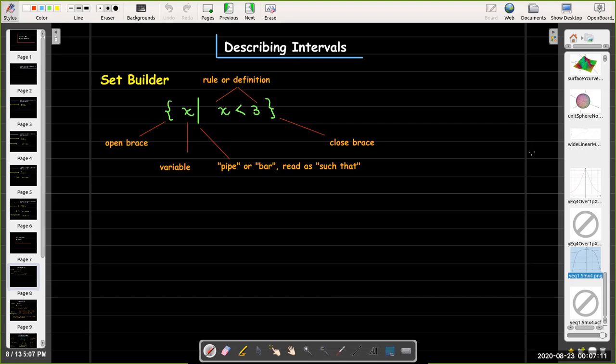After the bar you have a description, which could be an inequality, or some other kind of phrase which describes the numbers in the set. In this case, we would read this as x such that x is less than three.